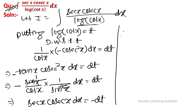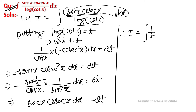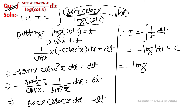Therefore I equals integration of 1 upon t, where sec x cosec x is replaced, times minus dt. Taking minus outside: minus log mod t plus c. Substituting back t equals log cot x, the answer is minus log mod of log cot x plus c.